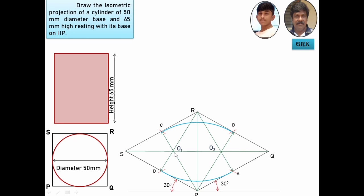Now, with O1 as center, OC as radius or OD as radius, you draw an arc. Next with O2 as center, O2B as radius or O2A as radius, you draw this arc to complete the circle. Now this is the original circle, in the isometric view it looks like an ellipse. This is how you are going to construct the ellipse.